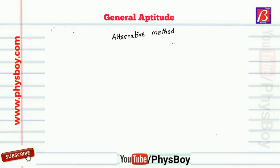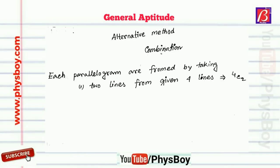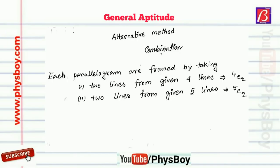You can also solve this question using an alternative method with permutation and combination. A parallelogram can be formed by taking two parallel lines from the given set of four parallel lines, together with taking another two parallel lines from the given set of five parallel lines.